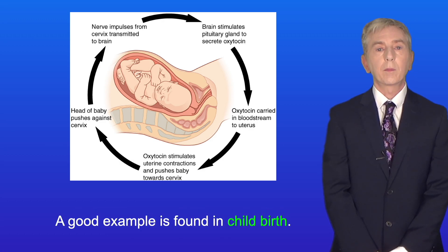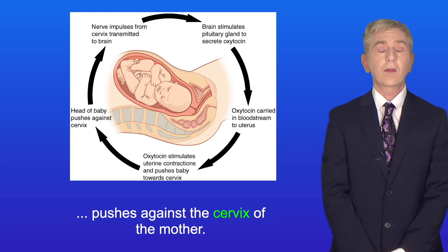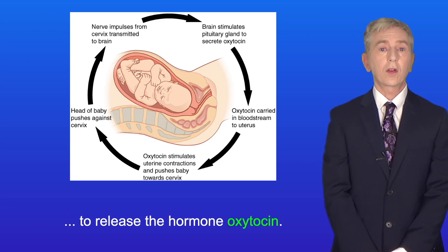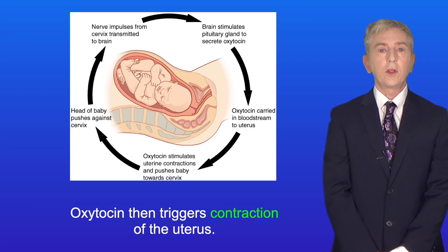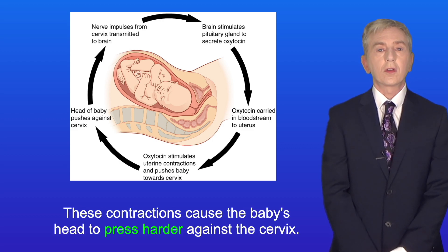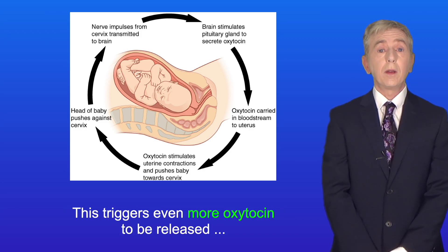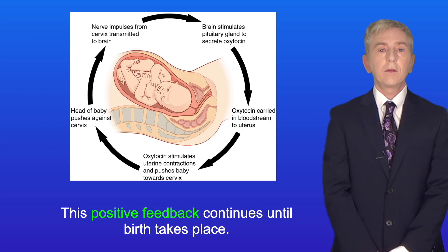A good example is found in childbirth. During childbirth, the head of the baby pushes against the cervix of the mother. Pressure on the cervix triggers the pituitary gland to release the hormone oxytocin. Oxytocin then triggers contraction of the uterus. These contractions cause the baby's head to press harder against the cervix. This triggers even more oxytocin to be released and the uterus to contract more strongly. And this positive feedback continues until birth takes place.